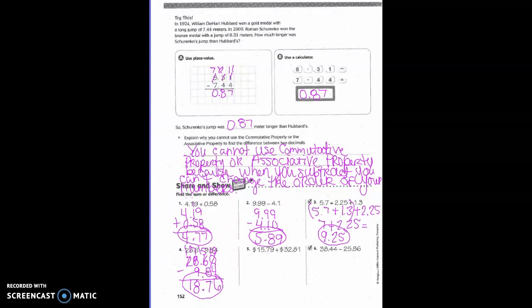15 dollars and 79 cents plus 32 dollars and 81 cents. Am I going to do the place value or commutative associative property? Place value. What do I need to do when I'm using decimals? Match up your decimals and place values. What do I do first? Bring down my decimals. 9 plus 1 is 10. Carry the 1. 1 plus 7 plus 8 is 16. Carry the 1. 1 plus 5 plus 2 is 8. 1 plus 3 is 4. So 48 dollars and 60 cents.